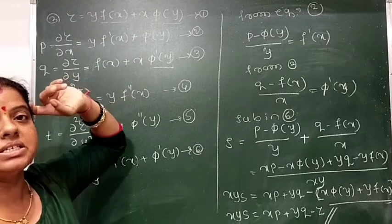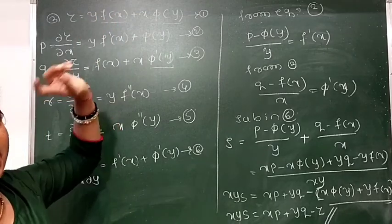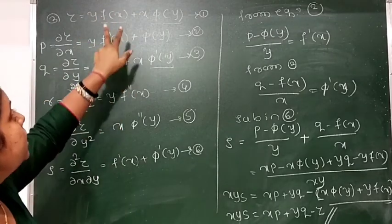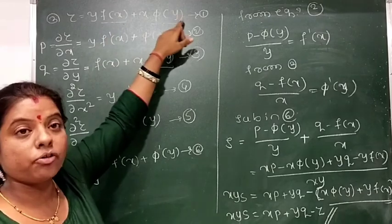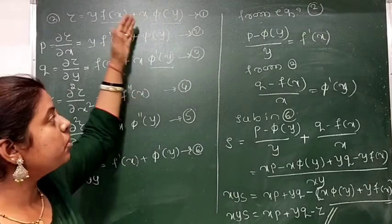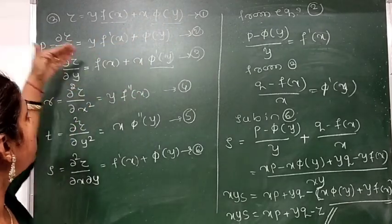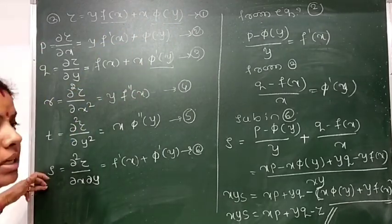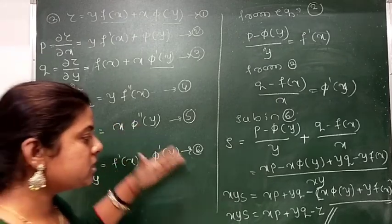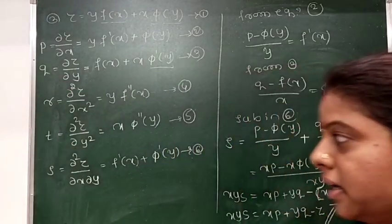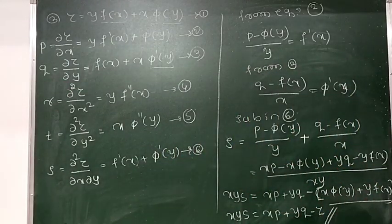The previous example had u and v terms; here the functions F of x and π of y are given. In that case you have to find all p, q, r, s, t terms and simplify to get in the form of pp plus qq equals r. Thank you.